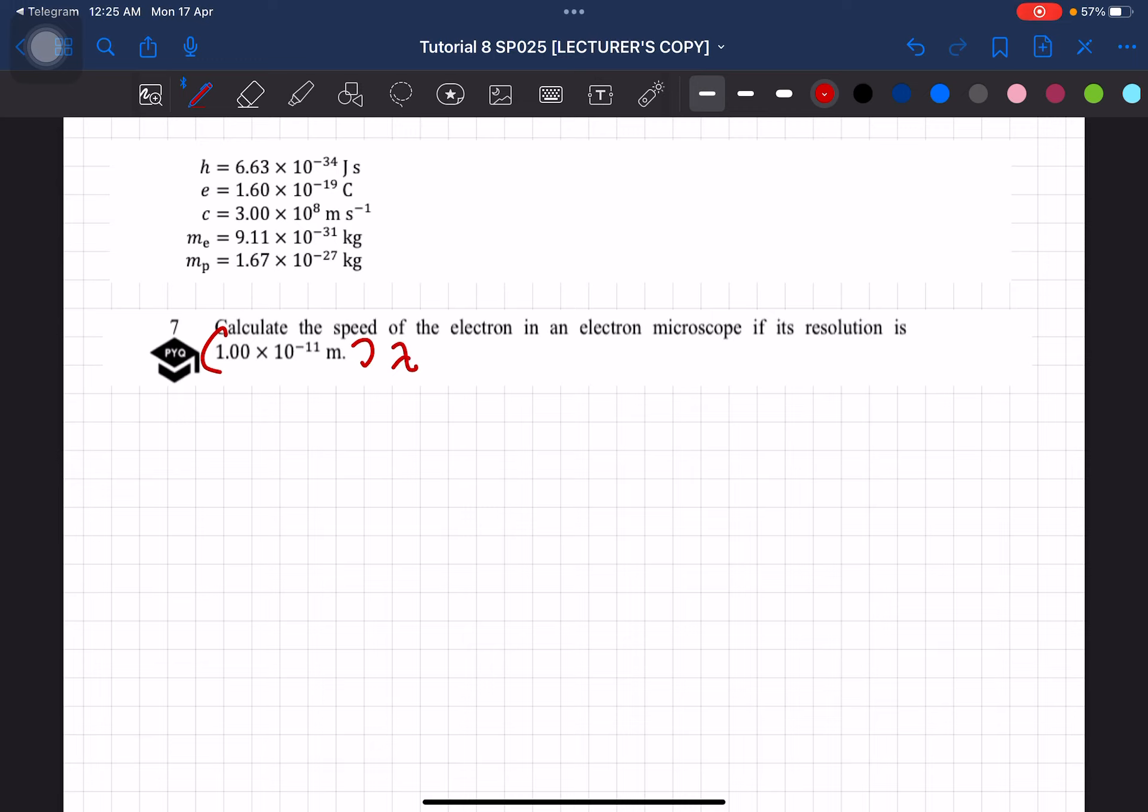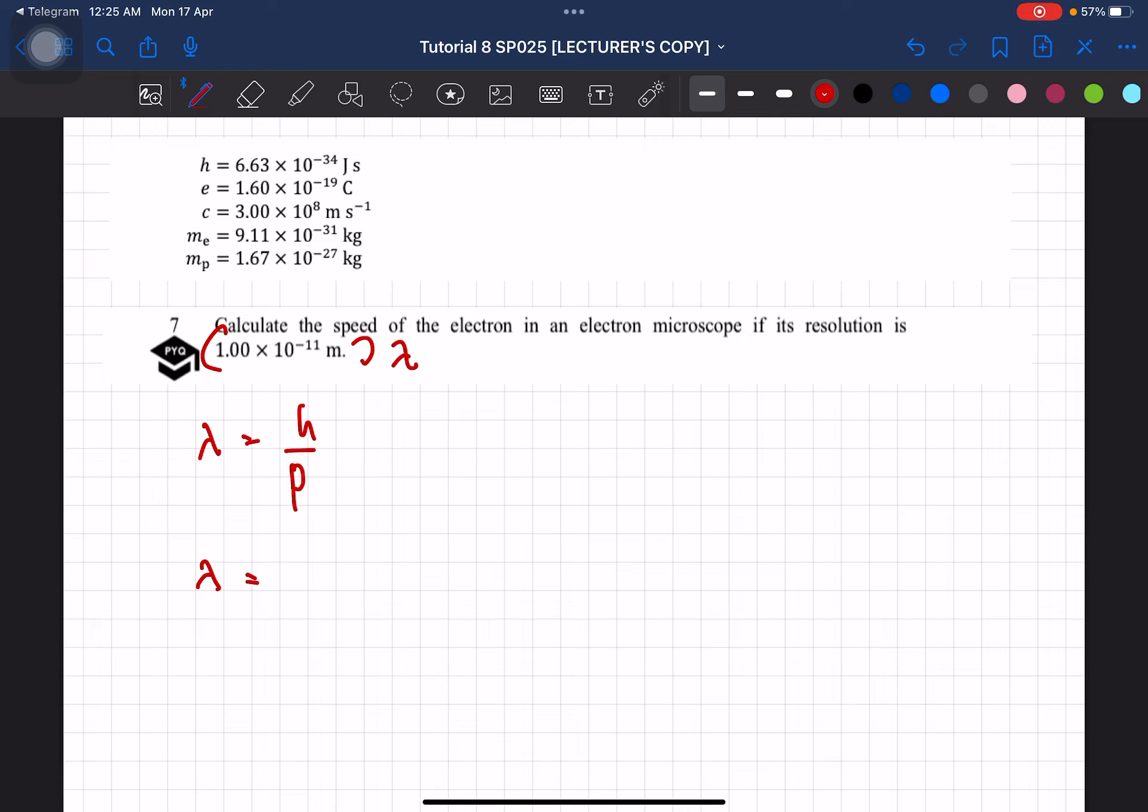Okay, so lambda is equal to h over p. So since they want speed, we need to let p here to be equal to mv.